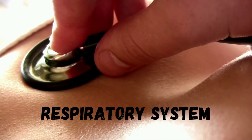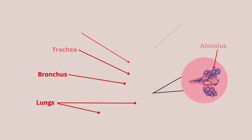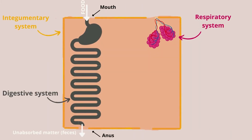Next we have the respiratory system. It is composed of the lungs and air pathways, which are the pharynx, larynx, trachea, bronchioles, and alveoli. This system supplies the blood with oxygen and removes carbon dioxide from the body. It also helps in the regulation of acid-base balance. It will be represented in the box with the alveoli.